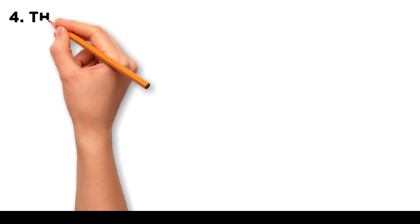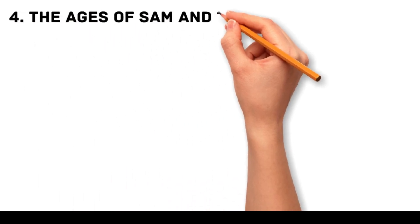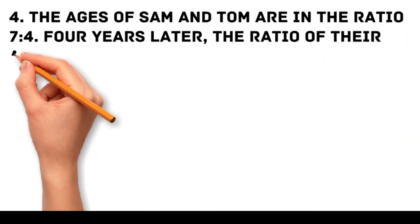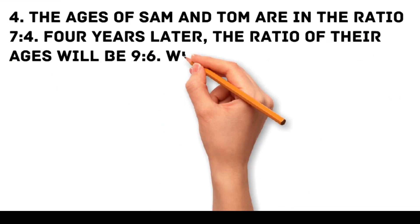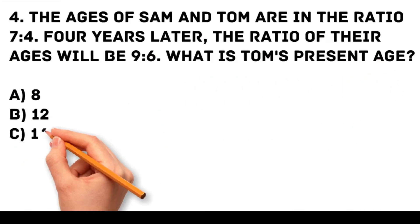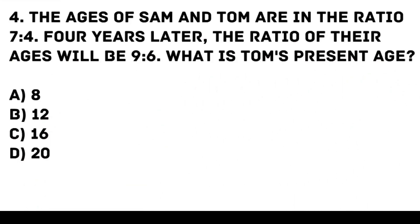Problem 4. The ages of Sam and Tom are in the ratio 7 to 4. Four years later, the ratio of their ages will be 9 to 6. What is Tom's present age? a. 8, b. 12, c. 16, d. 20.